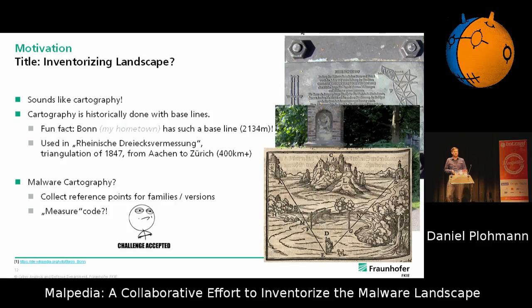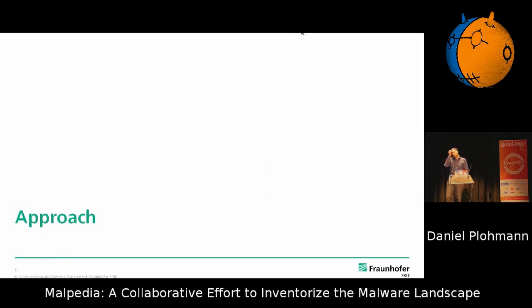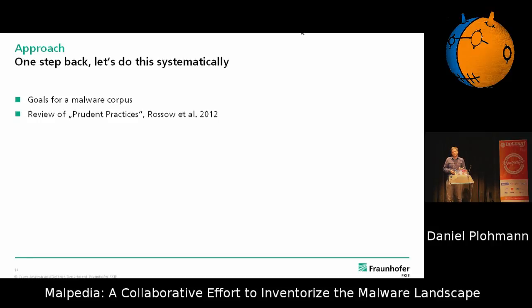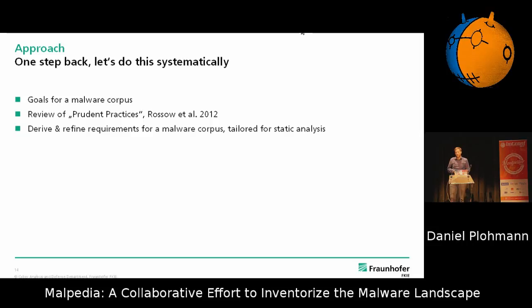So I thought, okay, let's give it a shot — and that was around about two years ago. For the approach, I thought it might make sense to go one step back and try to do it systematically from the start. What are probably some goals that you would want to pursue if you build a malware corpus? There's work from 2007–2012 by Christian Rosso, where he defined some prudent practices that people should follow if doing malware experiments. From that, we basically found our own requirements more tailored to our special case, which is looking at static analysis.